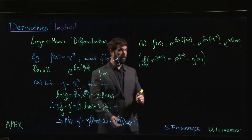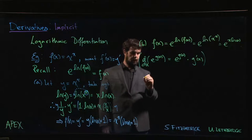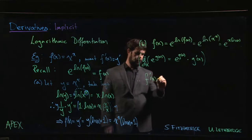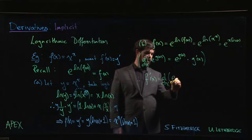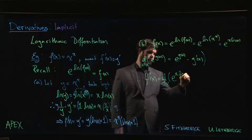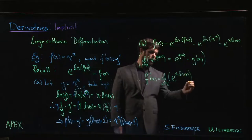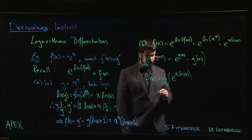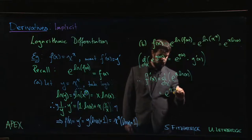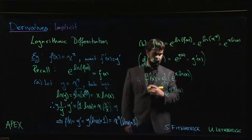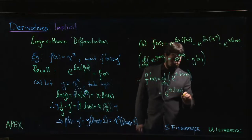So with that in mind we know that f prime of x is going to be the derivative of e to the x log x, which is e to the x log x times the derivative of the inside.